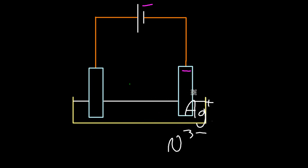Let me label my power supply. The negative electrode attracts the silver ions by electrostatic attraction. The positive electrode, the nitride ions.